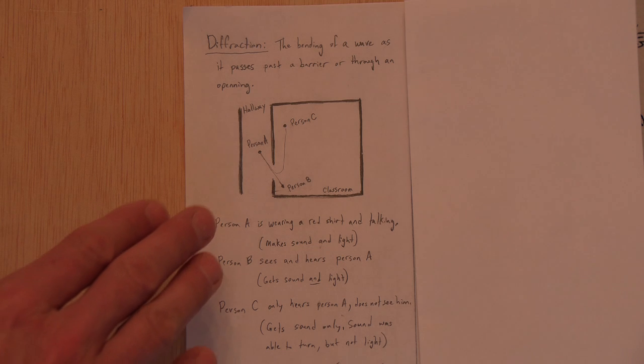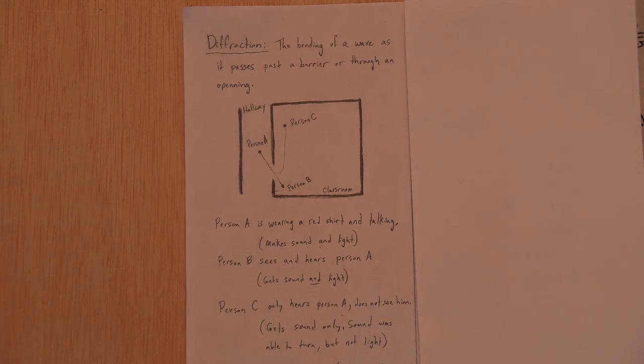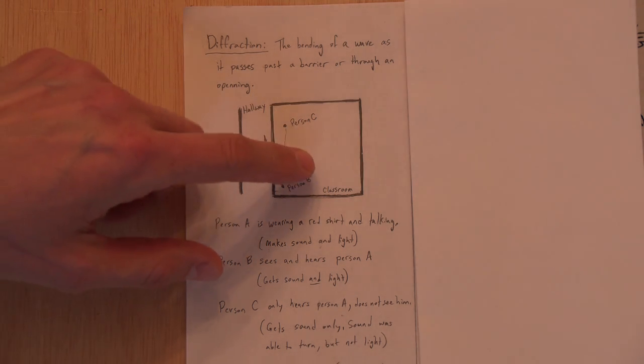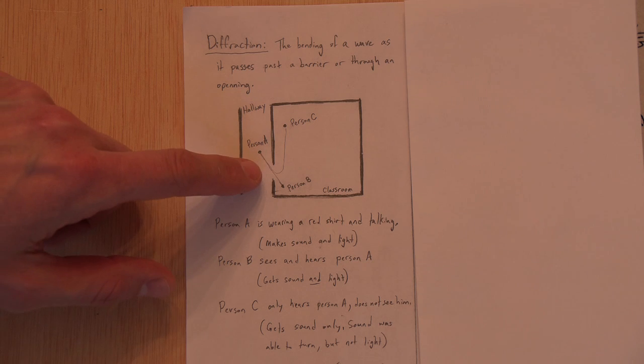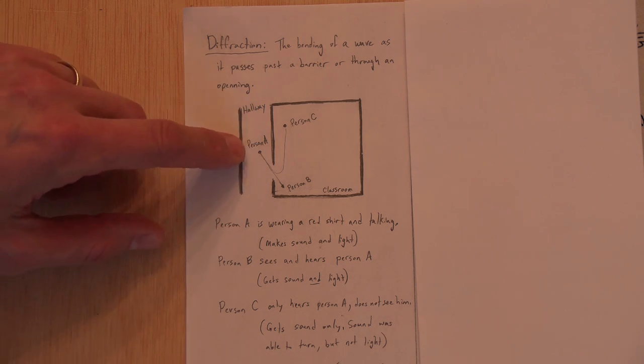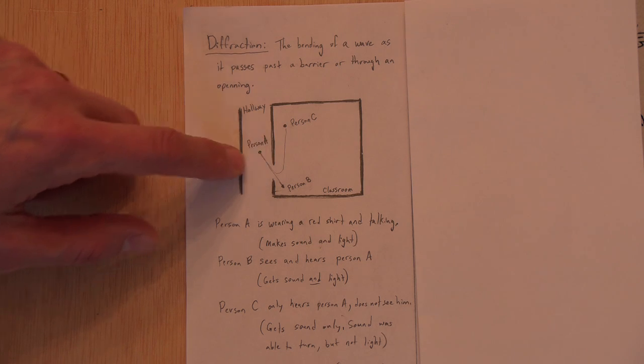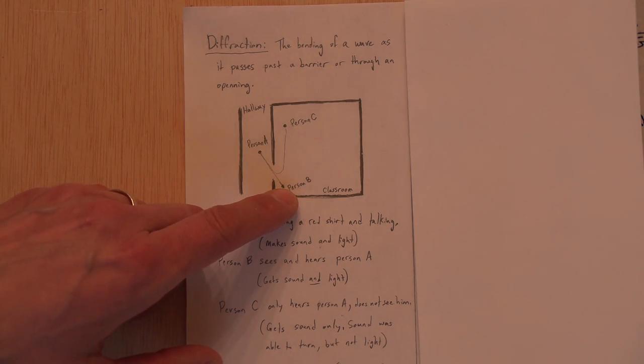So what I have here is a diagram. If we were at school, I would do this. I would go out into the hall. I would be person A. And I'd come out of the classroom and go toward the bus entrance of the school. And everyone would be seated here. So there'd be a wall between us.